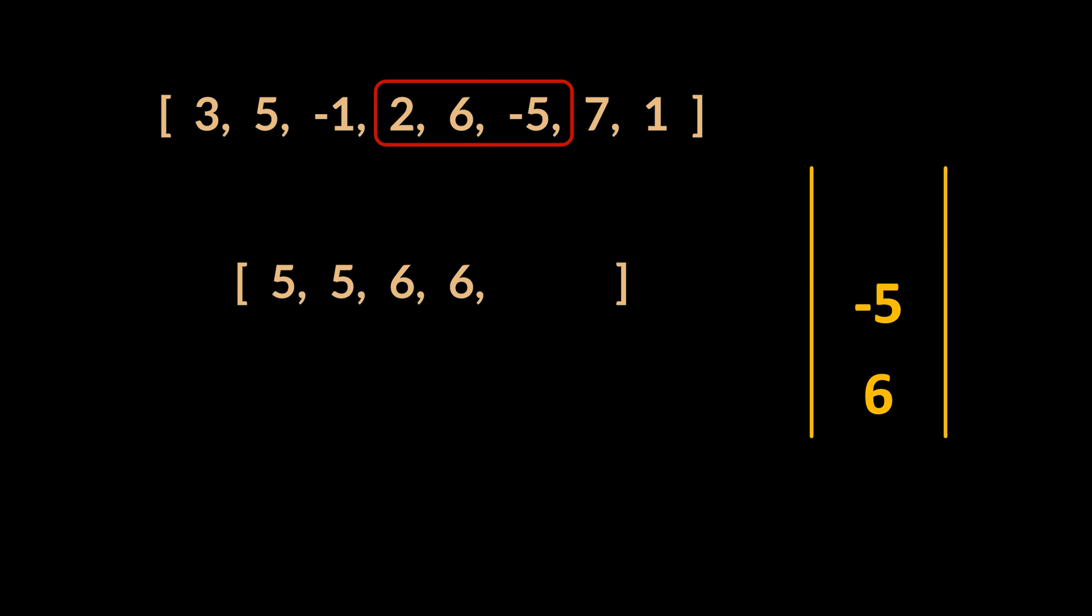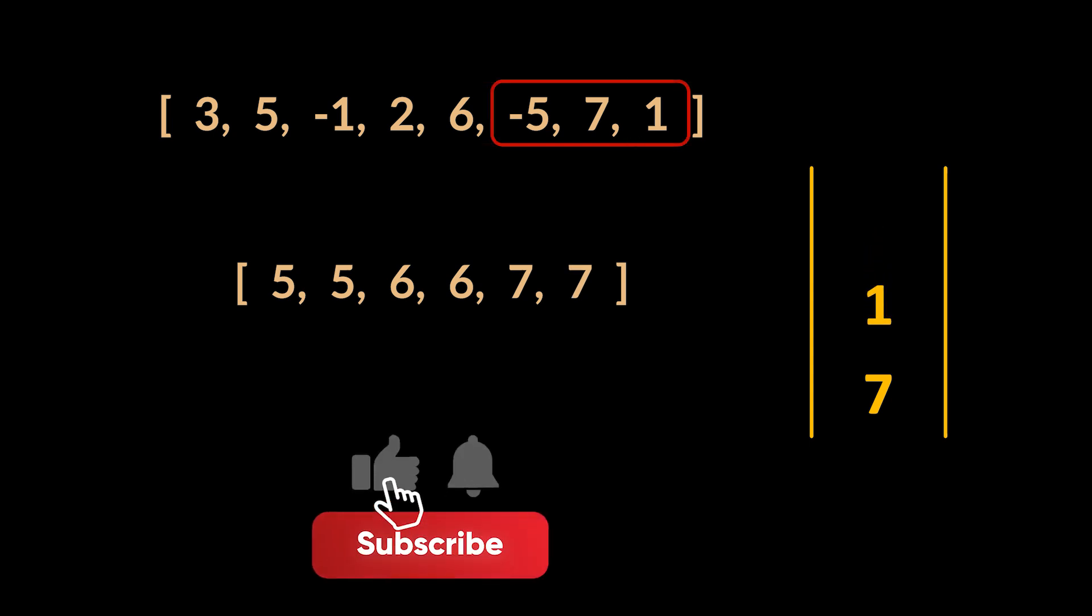Next, minus 5 is added, and 6 is the result as well. When 7 is added to the queue, since it is the biggest integer, the queue is emptied, and 7 is said to be the result of that window. In the last iteration, 1 is added, and 7 remains the result. That's it, the optimal solution to this problem.